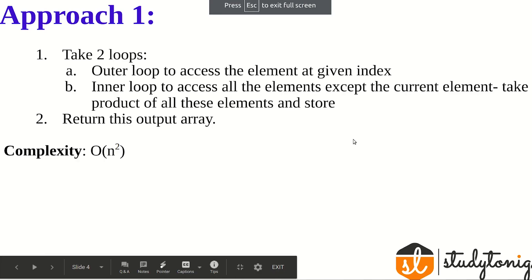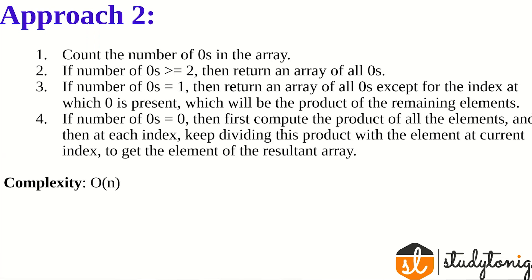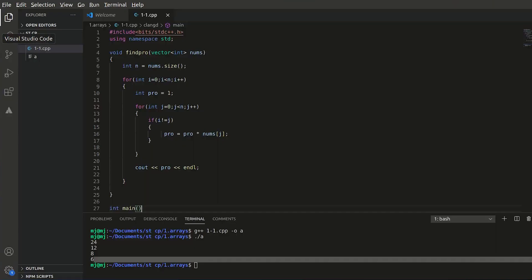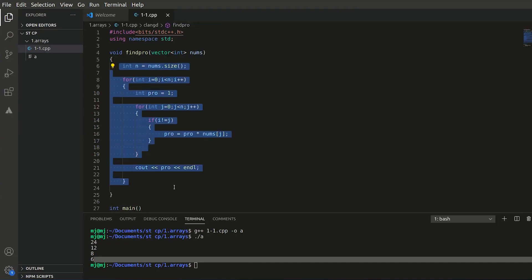We can optimize using the second approach based on counting zeros. If the count of zeros is greater than or equal to 2, return an array of all zeros. If the count equals 1, return an array of all zeros except at the index where zero is present, which gets the product of the remaining elements. If no zeros are present, compute the product of all elements and divide by the element at each index.